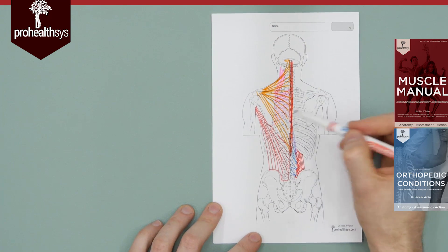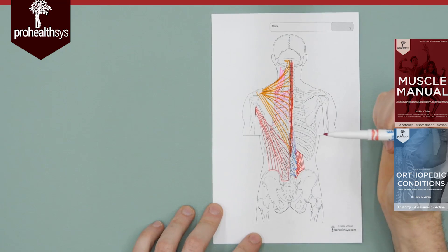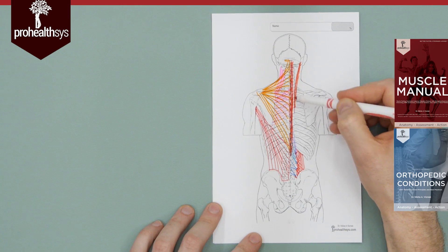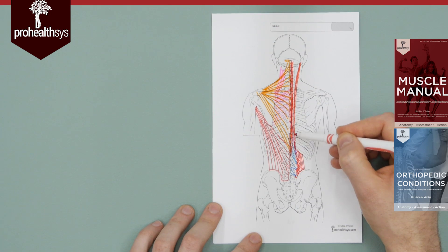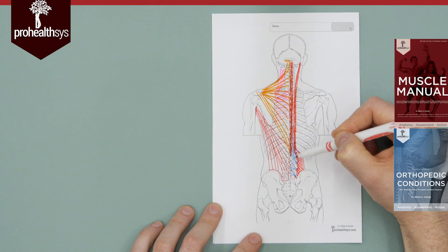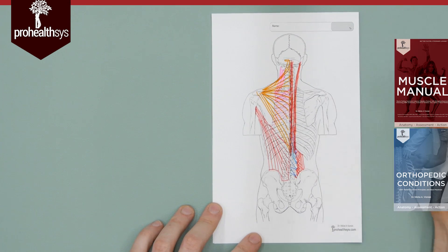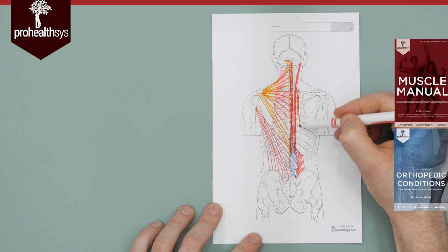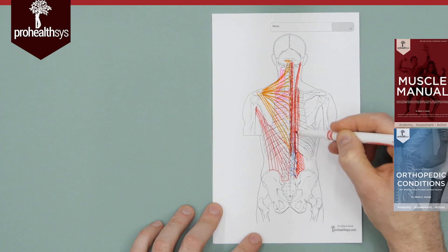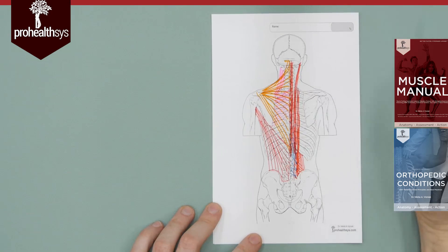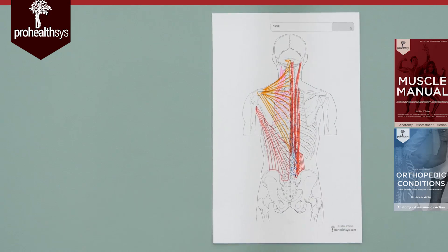The last erector spinae component is iliocostalis. It does not run up to the head. Iliocostalis winds up going into the thoracic region and runs all the way down into the lumbar spine. There's a little shift — iliocostalis covers the lower region while longissimus and spinalis shift up a bit further. Remember, thoracolumbar fascia lies over these, with transversospinalis deep to them.